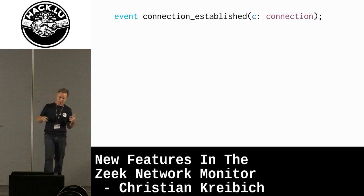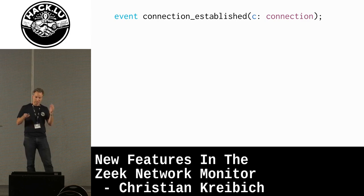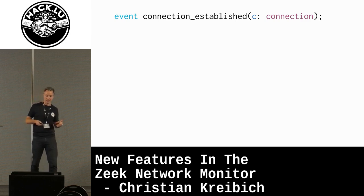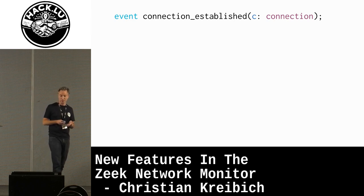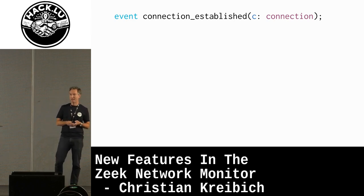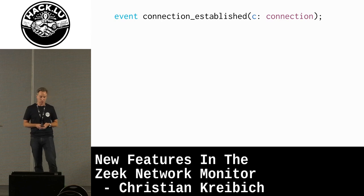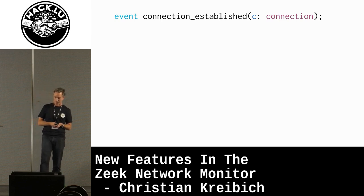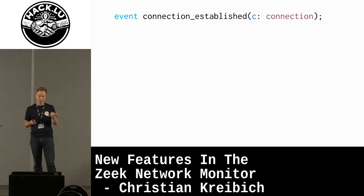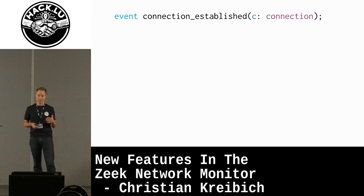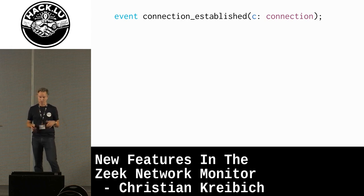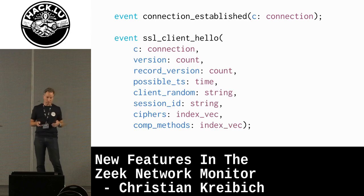I'm going to show you a couple of quick examples of what that looks like. This is one of the most commonly used events in the system. It's basically raised whenever we see a connection being established — and I mean connection loosely here, in the sense of a TCP or UDP flow. You can see that an event consists of a name and then typed arguments. In this case, it is just one argument that is a connection record with a bunch of metadata about the connection.